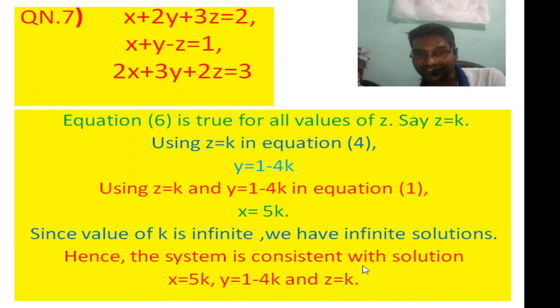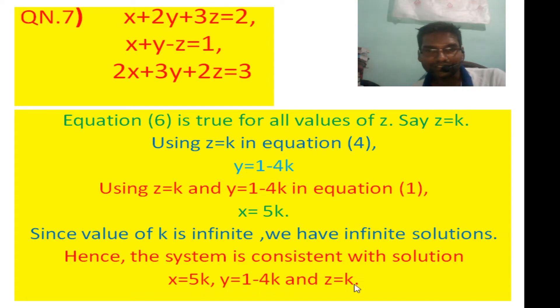The system is consistent. Equation 6 is true for all values of x, meaning the solution is infinitely many. So the solution is x equals 5k, y equals 1 minus 4k, and z equals k. This is the solution to question number 7.